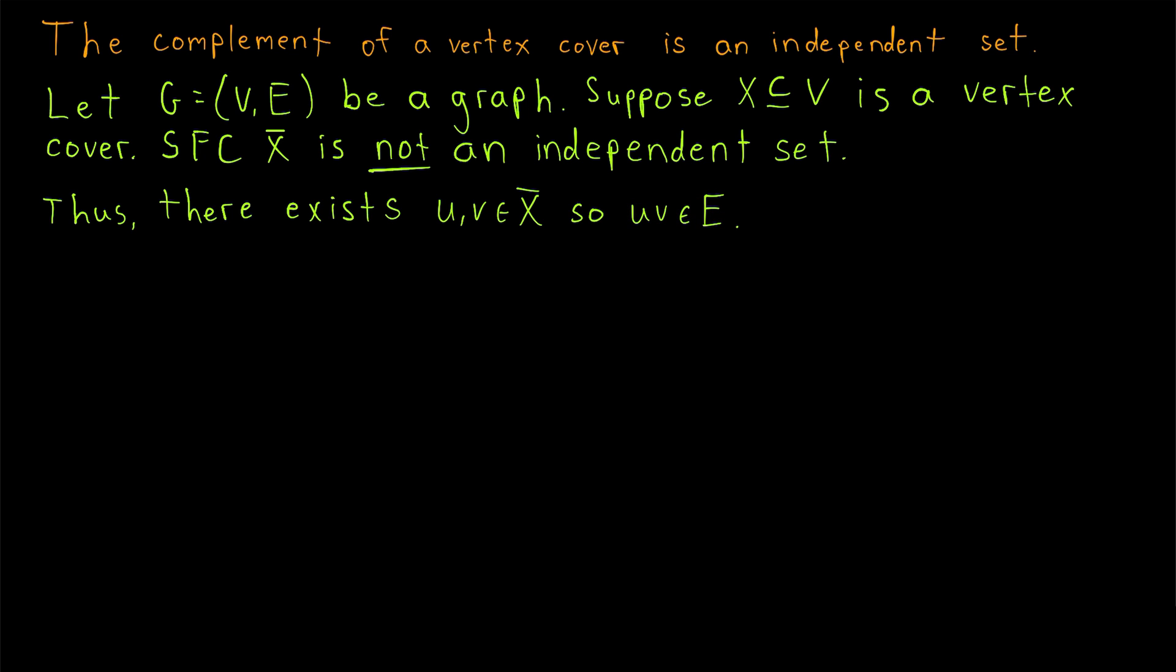Then the question we should be asking, is this edge covered by the vertex cover X? Well, since u and v are in X complement, that means by definition of complement that those vertices are not in X. But that means neither of the end vertices of the edge uv are in the vertex cover X. So the edge uv is not covered by X.